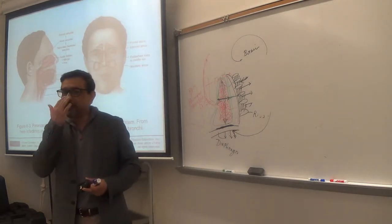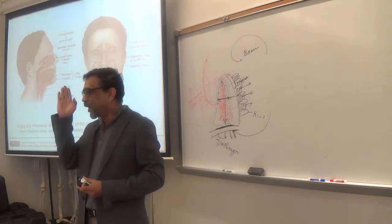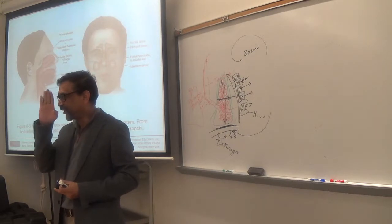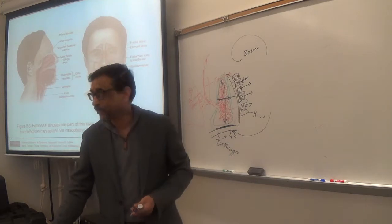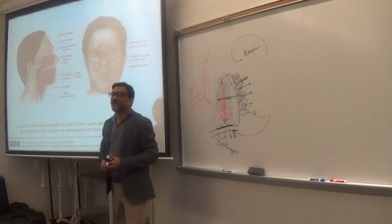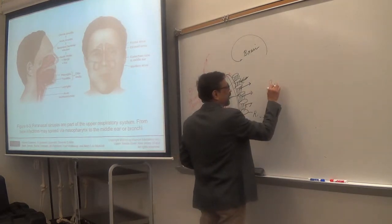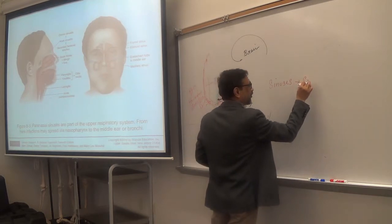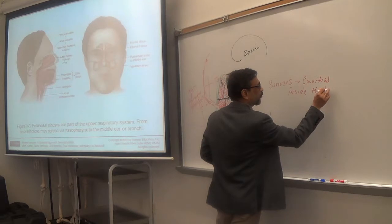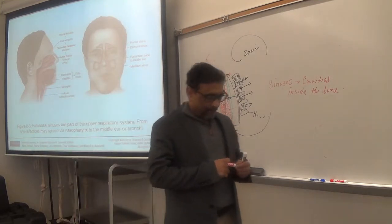Only a small part of the nose can be seen from outside — the external nose. Inside it you have the nasal cavity, which is separated into two halves by the nasal septum. Around the nose, inside the surrounding bones, you have cavities called sinuses.